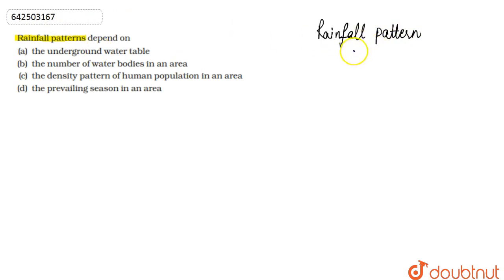The rainfall pattern depends on the number of water bodies present in that area or locality. Let's discuss how it depends on the number of water bodies by examining the cycle of water or rain.